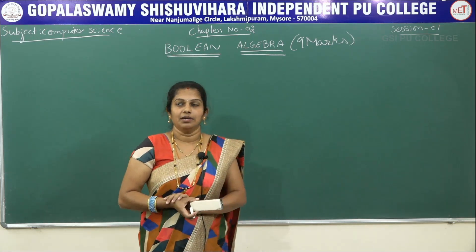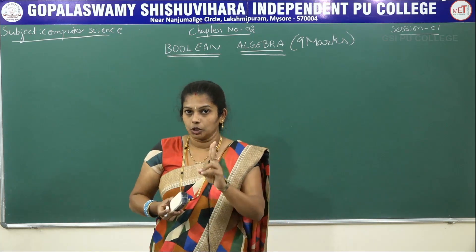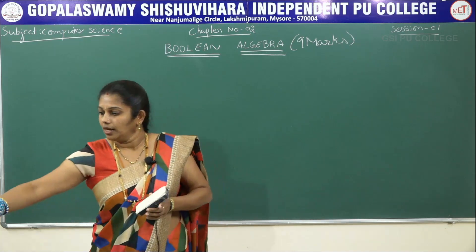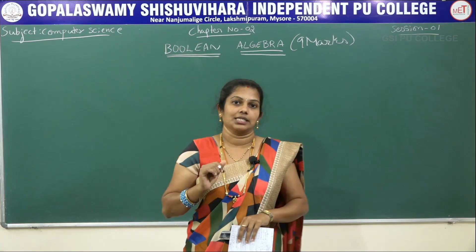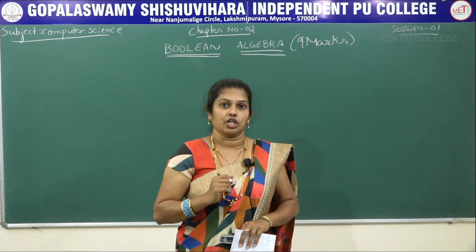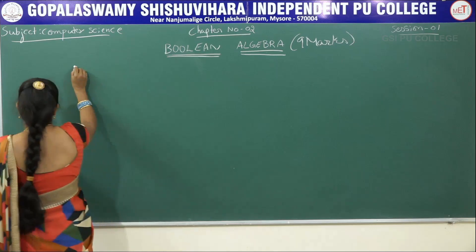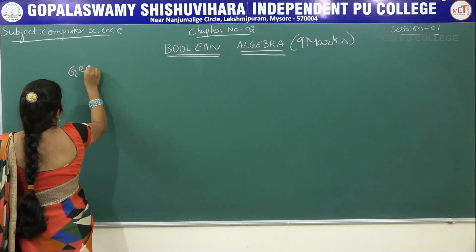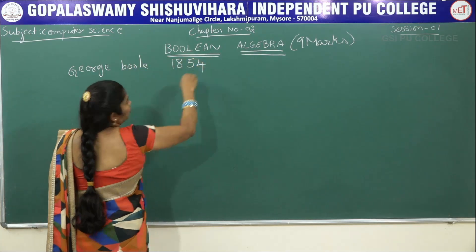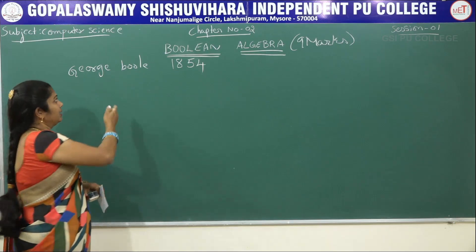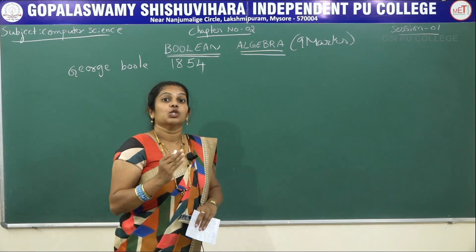The total weightage of this chapter is 9 marks — two questions of 2 marks each and one question of 5 marks. This chapter is mainly designed to understand and design logic circuits. We use Boolean algebra for this, and it was developed by George Boole in the year 1854.